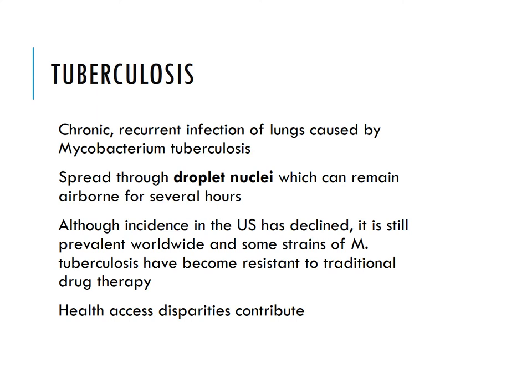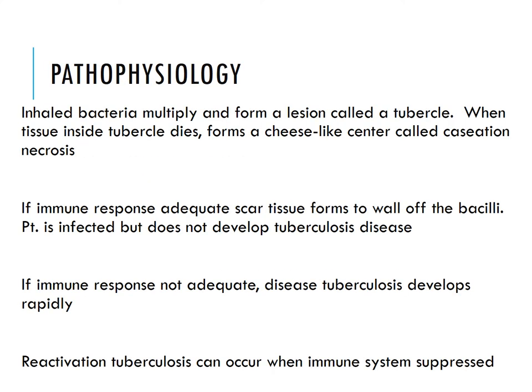Health access disparities contribute to the spread of TB. The inhaled bacteria multiply and form a lesion called a tubercle. When tissue inside dies it forms caseous necrosis. If the immune response is adequate, scar tissue walls off the bacilli — the patient is infected but doesn't develop active TB disease. If the immune response is inadequate, tuberculosis develops rapidly.